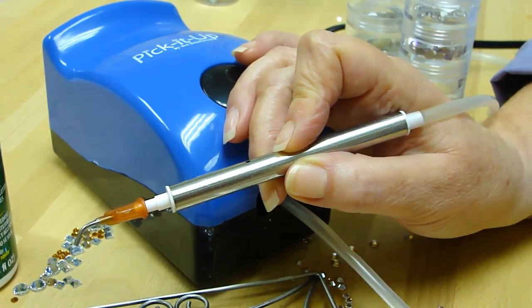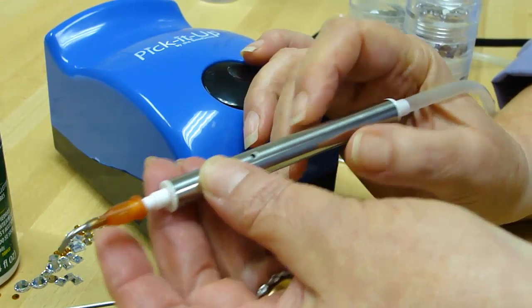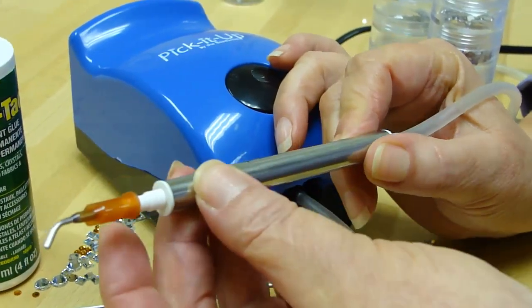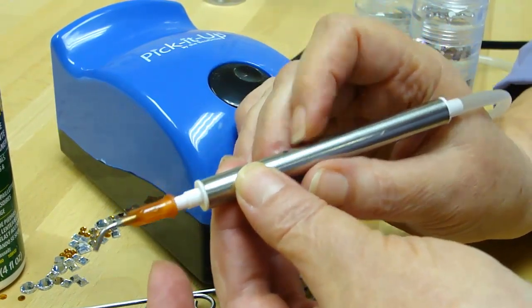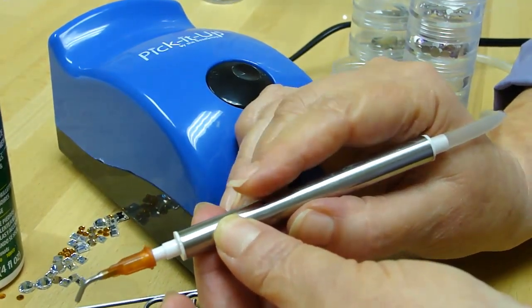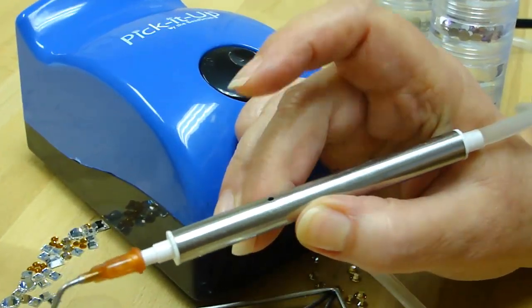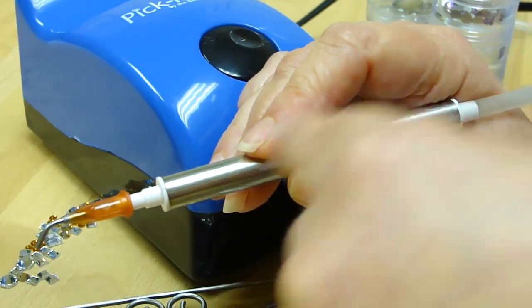So let me tell you a little bit about this neat tool. It has a lightweight, easy-to-hold wand that's shaped like a pen, a release hole that by placing your finger over it creates a suction.